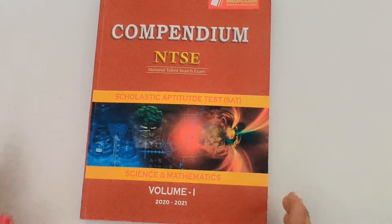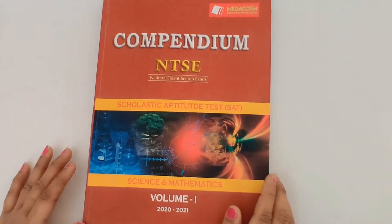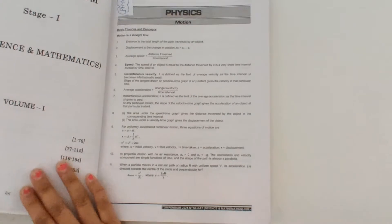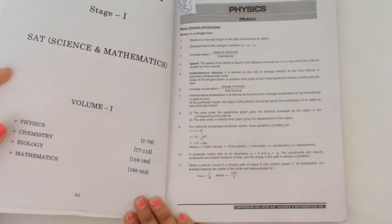There are 5 compendiums in class 9 and this is the first one which is prepared for scholastic aptitude test of NTSE. This compendium contains physics, chemistry, biology and mathematics sections.